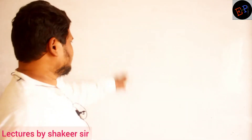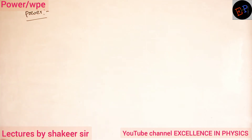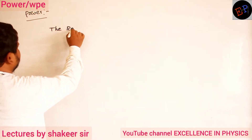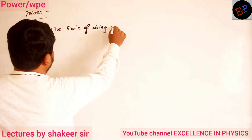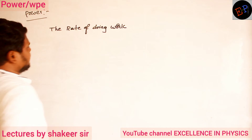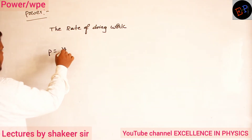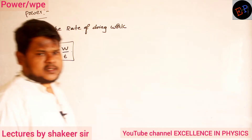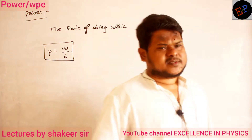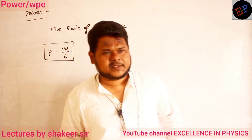Last topic in this chapter on work, power, and energy is power. So how can you define power? The rate of doing work is called power. Power is nothing but work done in a unit time. Or, how much work a person is able to do in a particular time — that is called power.